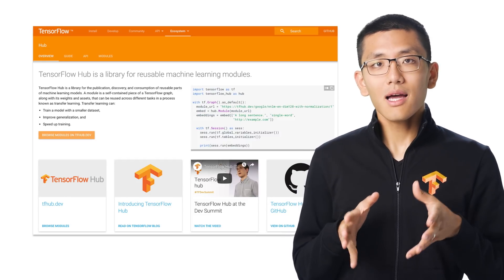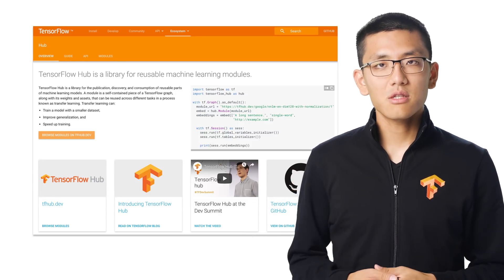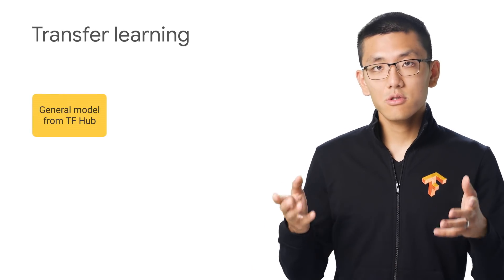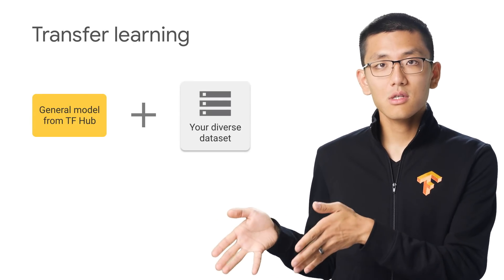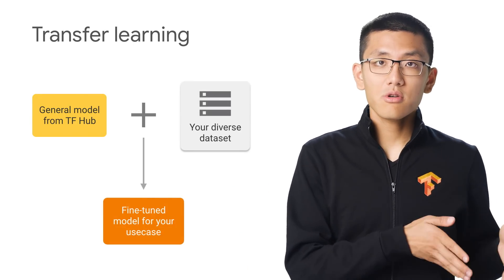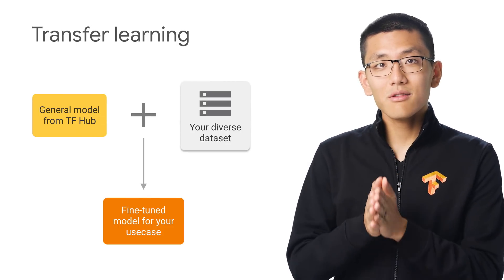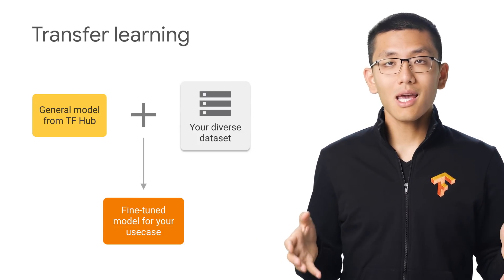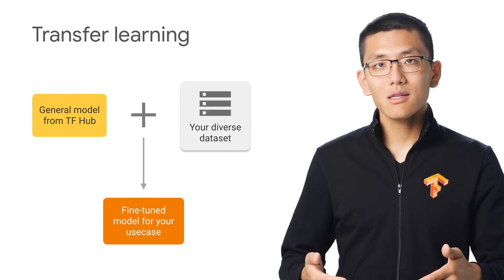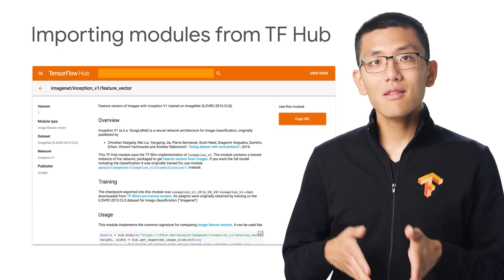TensorFlow Hub is a library for the publication, discovery, and consumption of reusable parts of machine learning models. The primary use case for the models in TF Hub is for transfer learning. Transfer learning is a technique to base your machine learning models on other large models, pre-trained on even larger datasets. This enables you to train your particular customized model on a smaller dataset, improve generalization, and speed up the training process, since you're not starting from scratch.